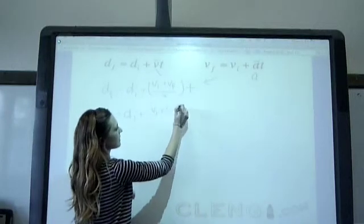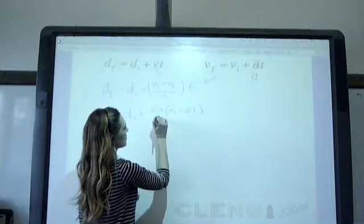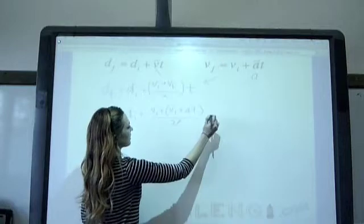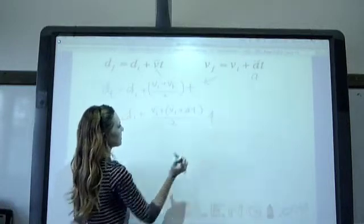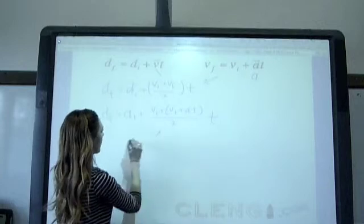So we get an equation with vi plus vi plus at, which is what our final velocity is equal to. So you're going to put that times t, and then, simplifying this part right here,